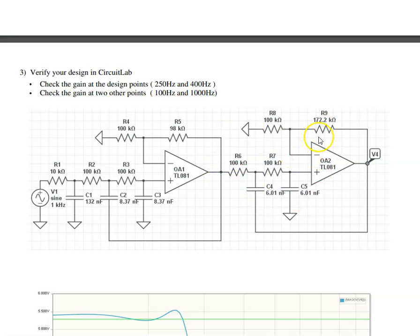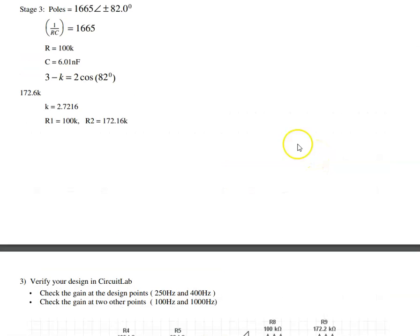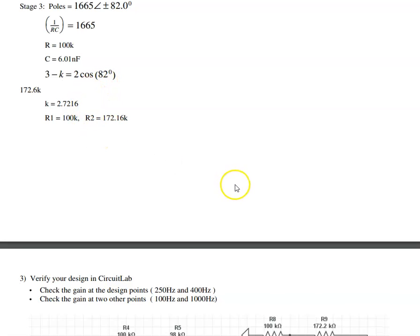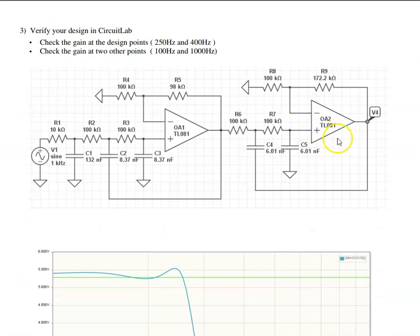And this last stage, one over RC is 1665. Solve for C. You get six nanofarads. To set the angle to 82 degrees, K is 2.7. It makes it 172k. So, there's my circuit.